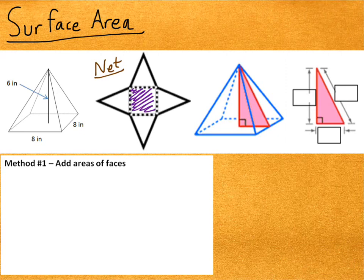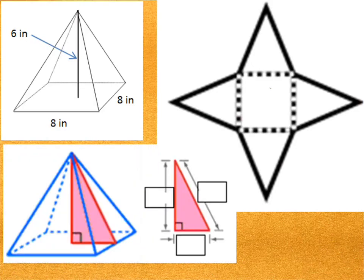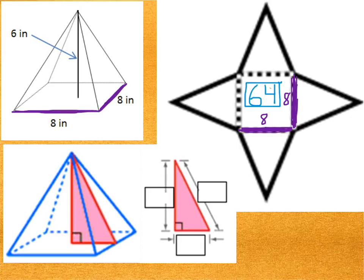We'll need to find the area of the square base and also the area of the triangles that form the sides of the pyramid, which you can see right there. Finding the area of the square base is quite easy. The sides of the base are 8 and 8, and you could easily tell me that the area of that square is 64. Now comes the task of finding the areas of the four triangles.